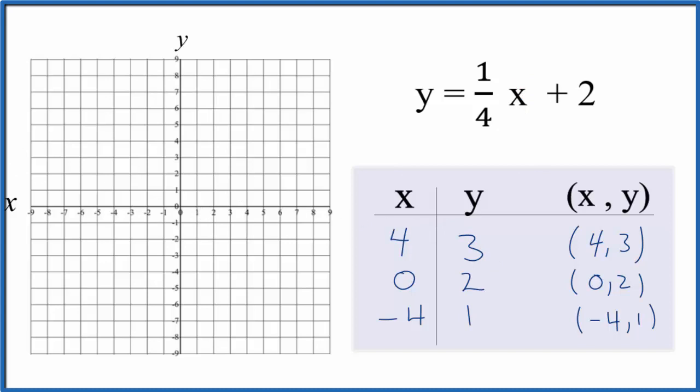So now we just graph these points here on our graph paper. We have x is 4, so let's go over 1, 2, 3, 4 and y is up to 3, that's our first point. Then we have 0 for x, y is 2. And finally negative 4 for x, 1, 2, 3, 4, and then 1 for y. And you can see they're in a line there. We can even put a line through that, now put arrows here to show that it goes to infinity. And this is the graph for y equals 1/4x plus 2.